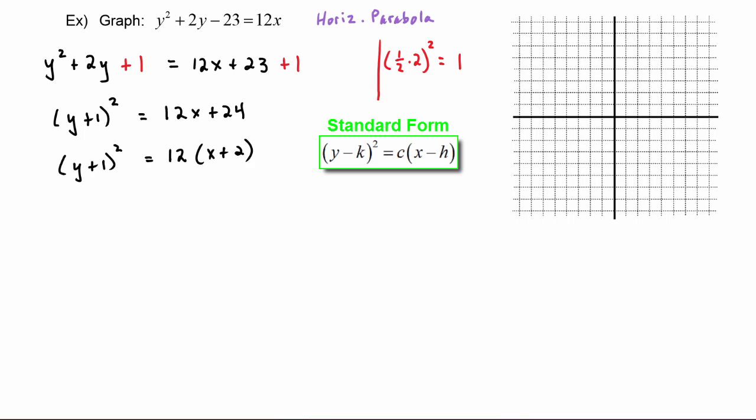Now that we have it in standard form, we can find out that the vertex is going to be at (-2, -1). So let's go over on our graph and plot that. We've got (-2, -1) is the vertex.